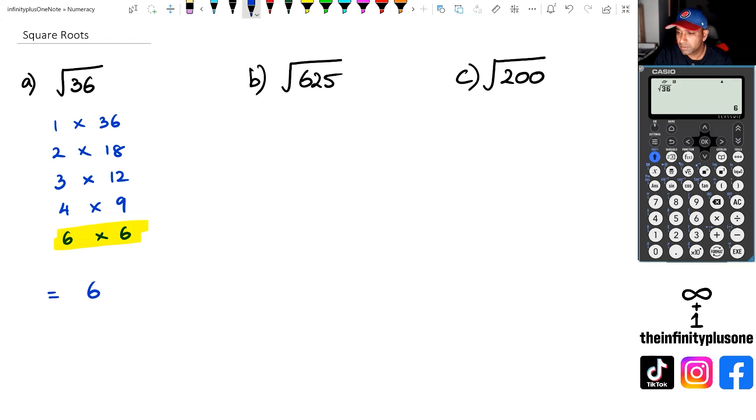And for question B, I'm going to just punch it straight away: square root of 625, and that's going to give me 25. Square numbers sometimes they're not perfect squares. Now the first two questions that I've done here, they're perfect squares.